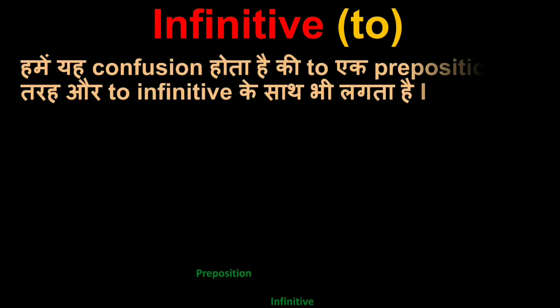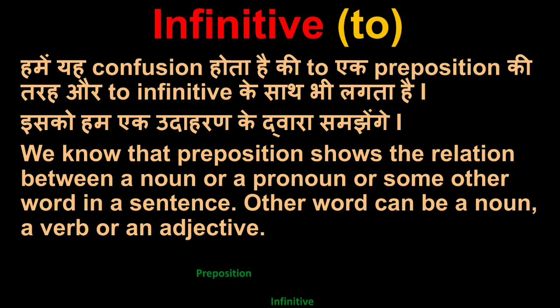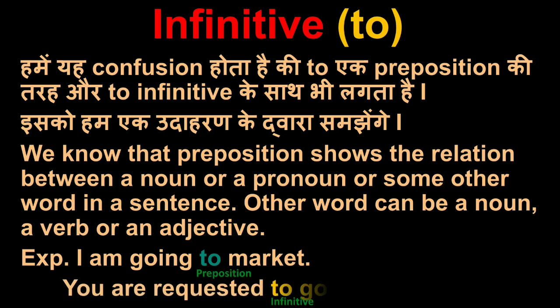We have confusion that 'to' works like a preposition and also appears with infinitive. Let's understand this through an example. We know that preposition shows the relation between a noun or pronoun or some other word in a sentence. Other word can be a noun, verb, or adjective. Example: 'I am going to market' - here 'to' is preposition showing relation between 'I' and 'market'. Another example: 'You are requested to go to market' - here 'to go' is infinitive, and in the first sentence 'to market' is preposition. I hope we could understand the difference between preposition and infinitive.